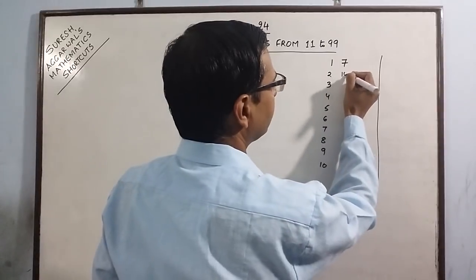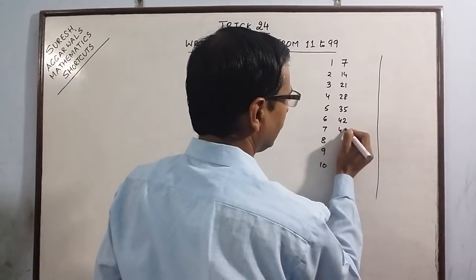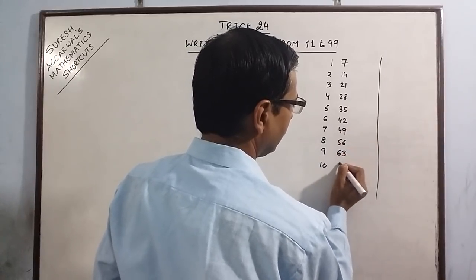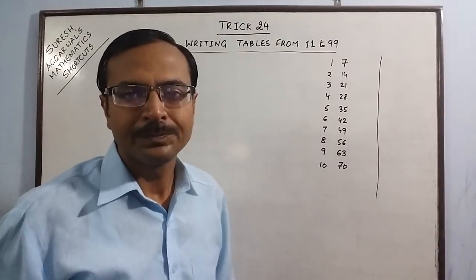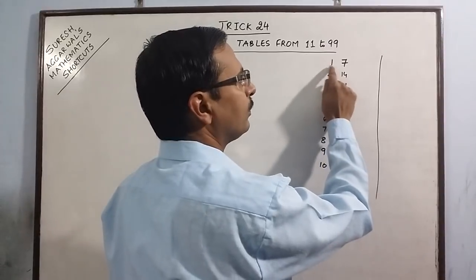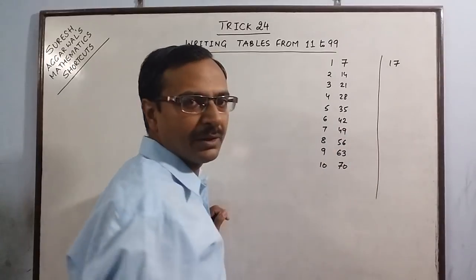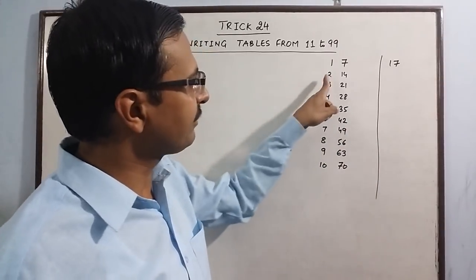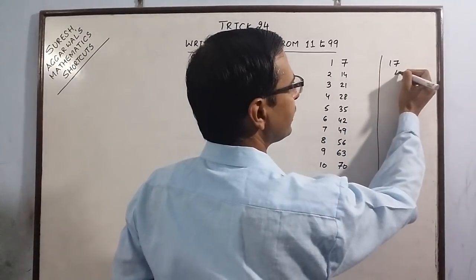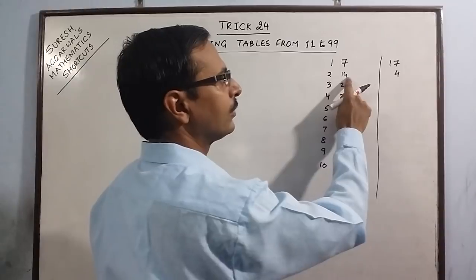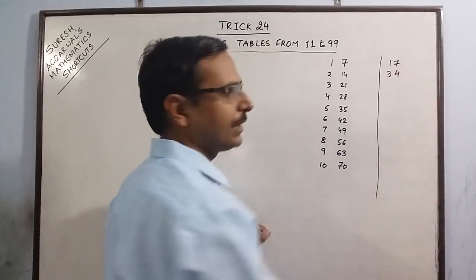So the table of 7. When I have single digits on both sides, I write them as they are. So 17 times 1 is 17. But from here on I have 3 digits. So what I do is write the unit digit as it is — 4 — and add the remaining digits. 2 plus 1 is 3. That's all.